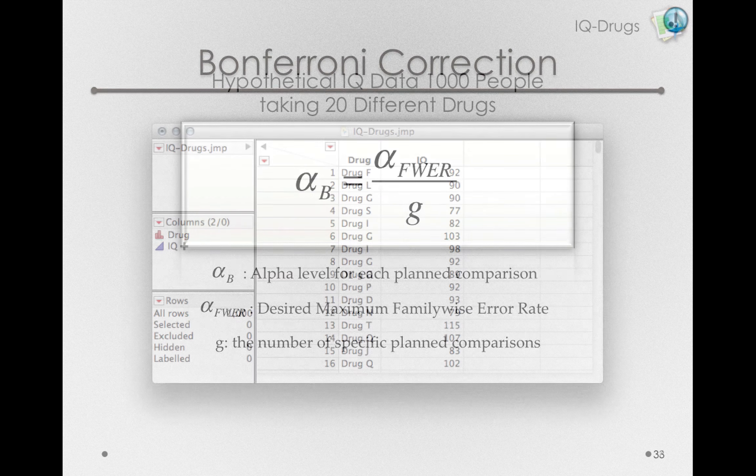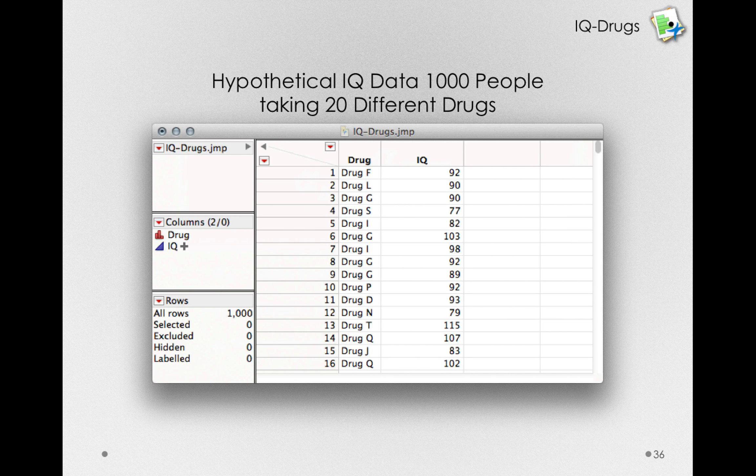Let's try this out with that hypothetical data for a thousand people taking those 20 different drugs. Let's imagine that the overall alpha we want to maintain is 0.05, and we've specified in advance 5 particular comparisons we care about: A vs. B, A vs. C, A vs. D, A vs. E, and A vs. F. So those are the only comparisons that we actually need to concern ourselves with.